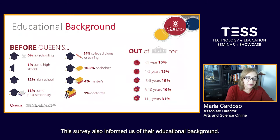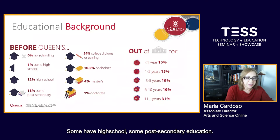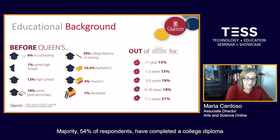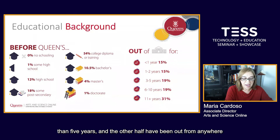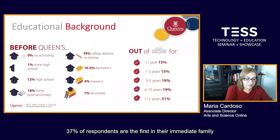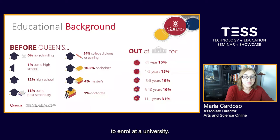The survey also informed us of their education background. Some have high school, some have post-secondary education. The majority — 54% of respondents — have completed a college diploma or vocational training. Half of the respondents have been out of school for more than five years, and the other half have been out anywhere from one to five years. 37% of respondents are the first in their immediate family to enroll at university.